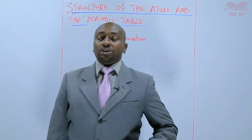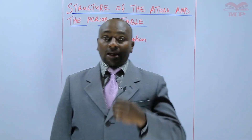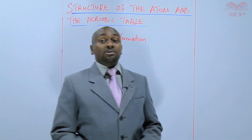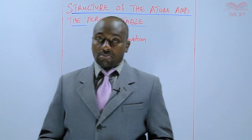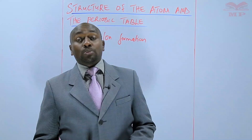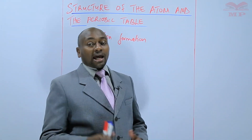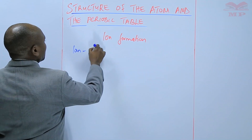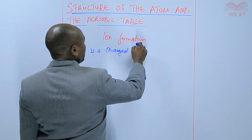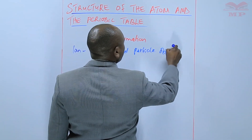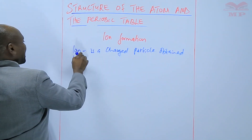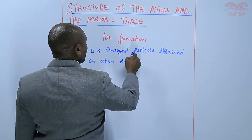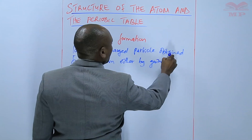Before we get into more details about ion formation, we know that an ion is a charged particle, and that charged particle is obtained from an atom. An ion is a charged particle obtained from an atom, either by gaining or losing electrons.